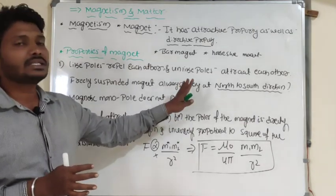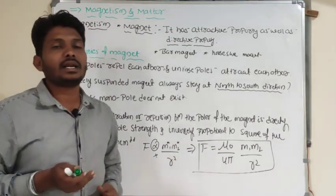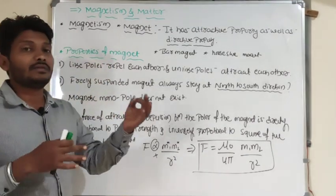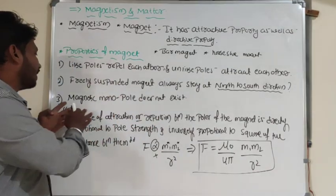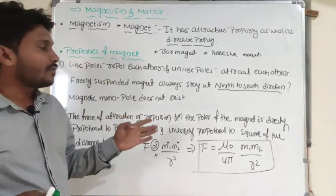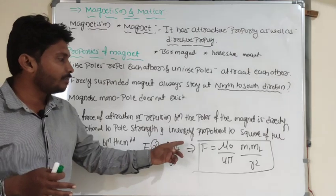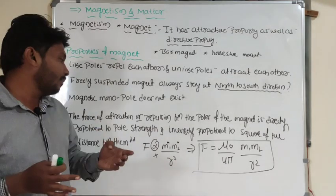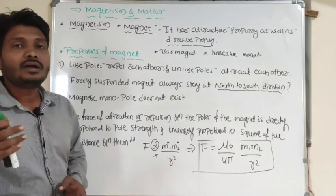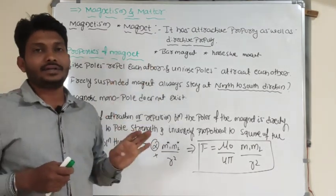These are the basic properties of a magnet: first, like poles repel and unlike poles attract; second, a freely suspended magnet always stays in the north-to-south direction; third, magnetic monopole does not exist; fourth, the force of attraction or repulsion between poles is directly proportional to the product of pole strengths and inversely proportional to the square of the distance between them.